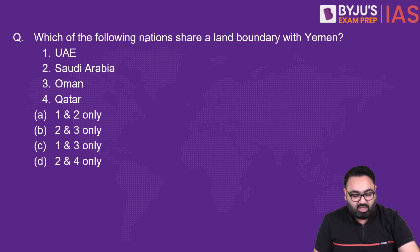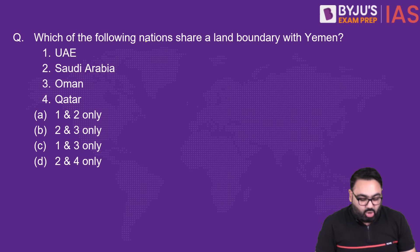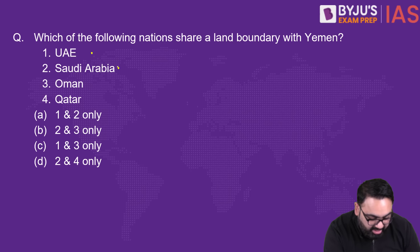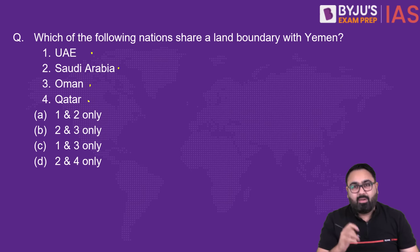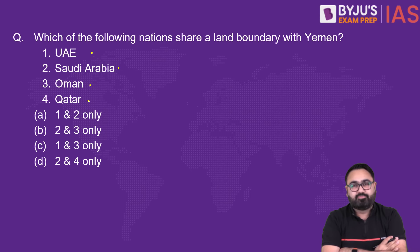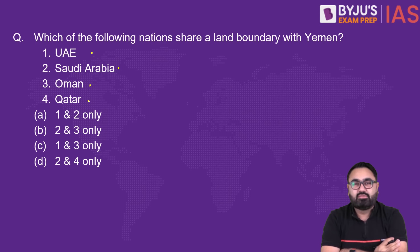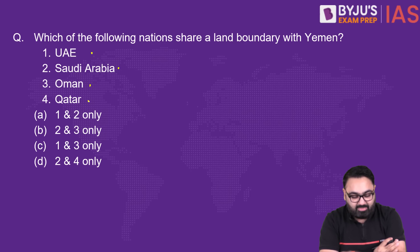Moving to the third question: which of the following nations share a land boundary with Yemen — UAE, Saudi Arabia, Oman, or Qatar? Take 30 seconds and imagine the map in your mind. Yemen shares a boundary with which of these?